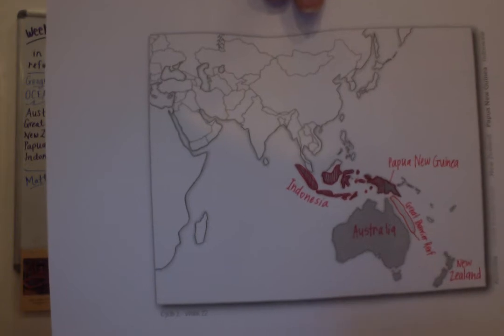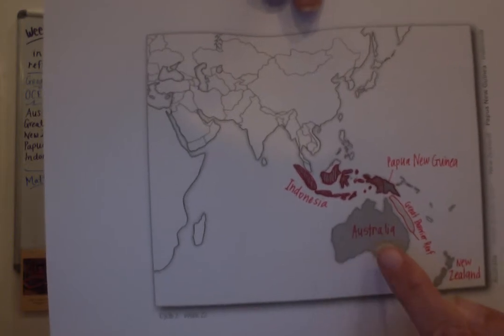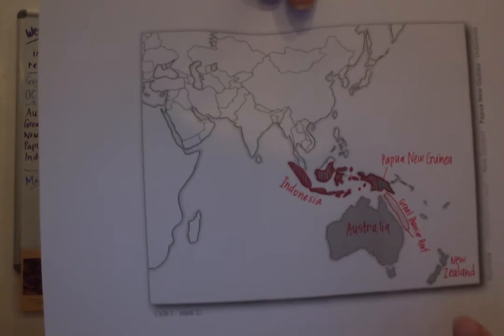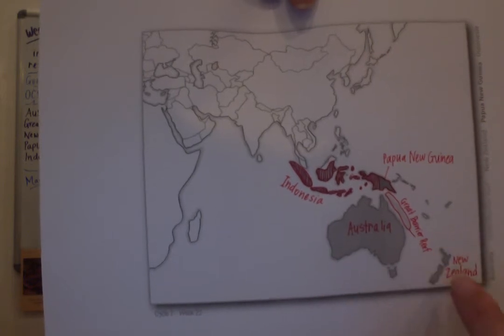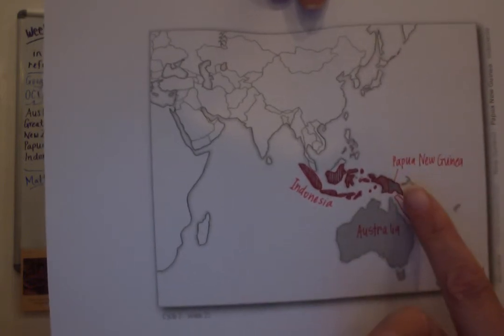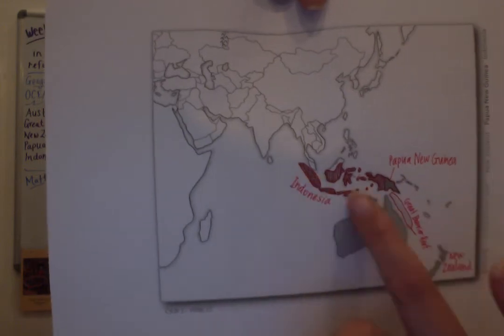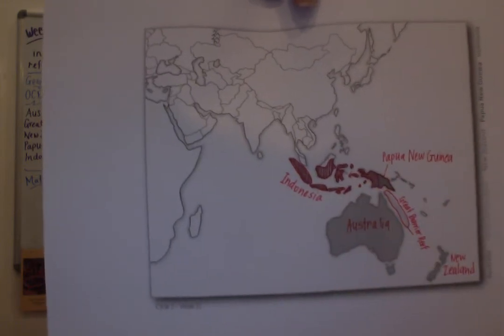Let's do that again. We have Australia, the Great Barrier Reef, New Zealand, Papua New Guinea, and Indonesia. So copy those on your map.